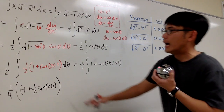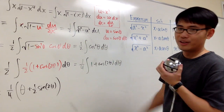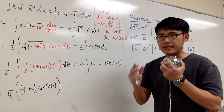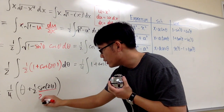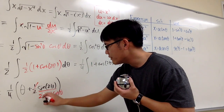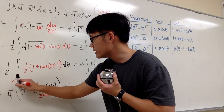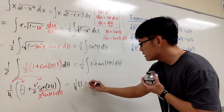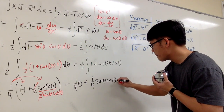We're pretty much done, but I have to go back to the x-world. First, since u equals sine theta, we can apply the double angle formula: sine 2 theta equals 2 sine theta cosine theta, and the 1 half and the 2 cancel. Bringing the 1 fourth inside, we get 1 fourth theta plus 1 fourth sine theta cosine theta.